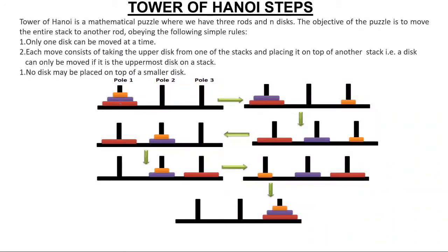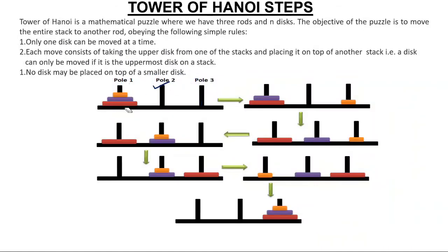The goal is: with the help of pole 2, you have to place the same arrangement — biggest at the bottom, then smaller, then smallest — in pole 3. It doesn't mean that you take all the discs at one go and place them like that.